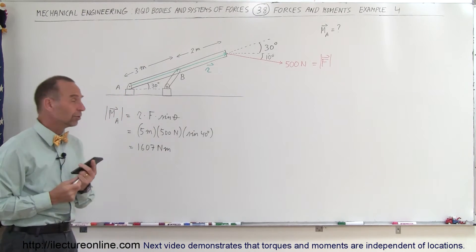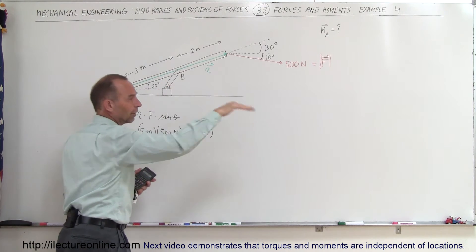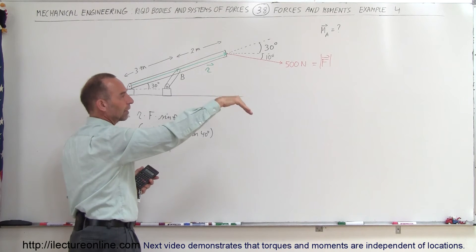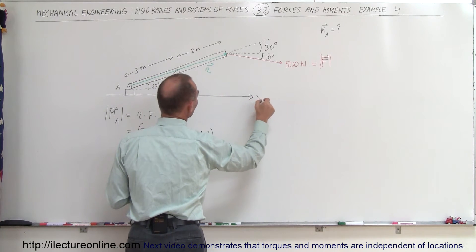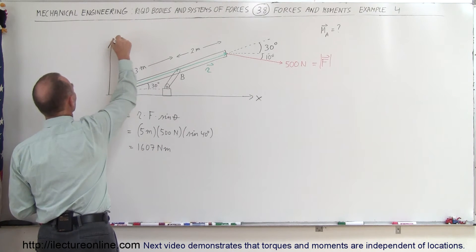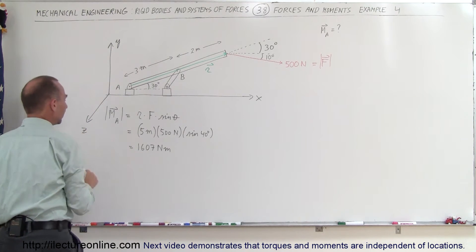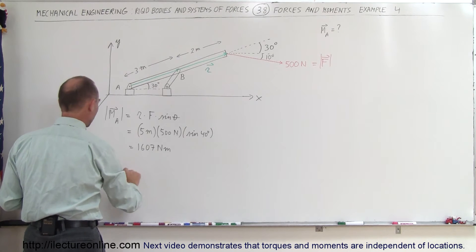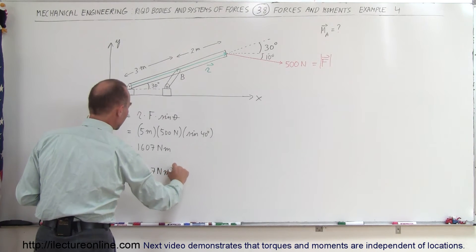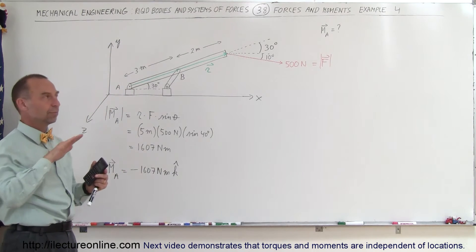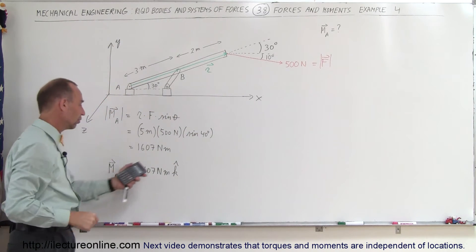That's the magnitude. What about the direction of the moment? You can use your right-hand rule. Curl your fingers in the direction of the position vector, then turn your fingers in the direction of the force — your thumb will point into the board. If this is the X direction, this is the Y direction, and coming out of the board is the Z direction, then the moment about point A in vector format would be minus 1,607 newton meters in the K direction — that is, the negative Z direction.